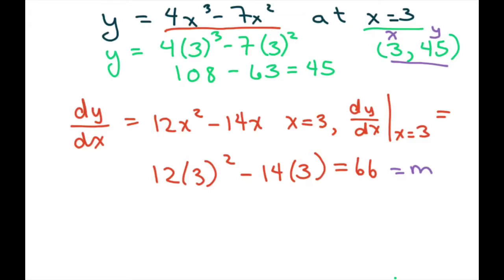If I use that point-slope form, I get y minus this one here, which is 45, equals 66 times x minus 3.